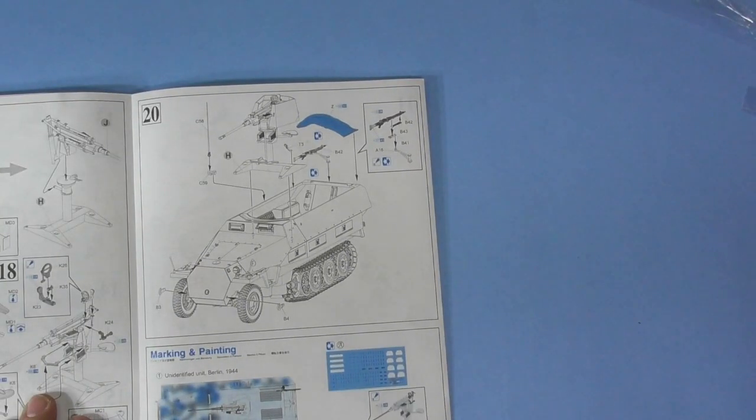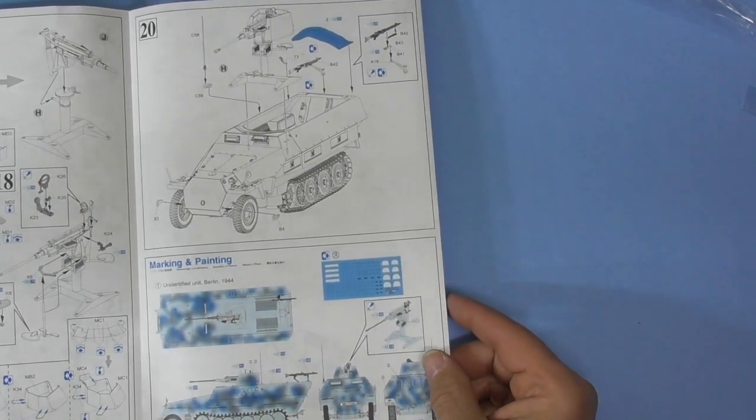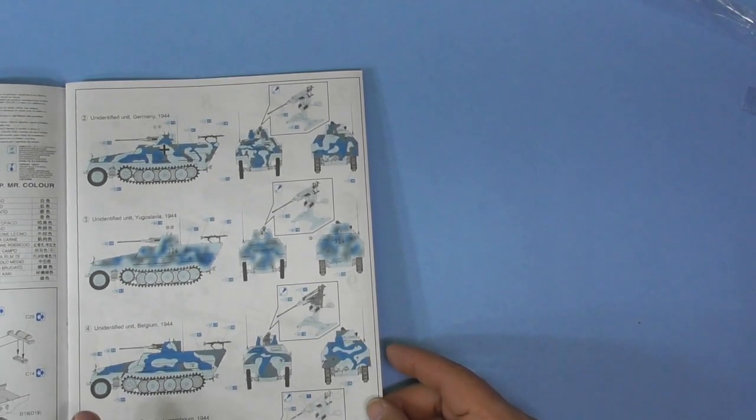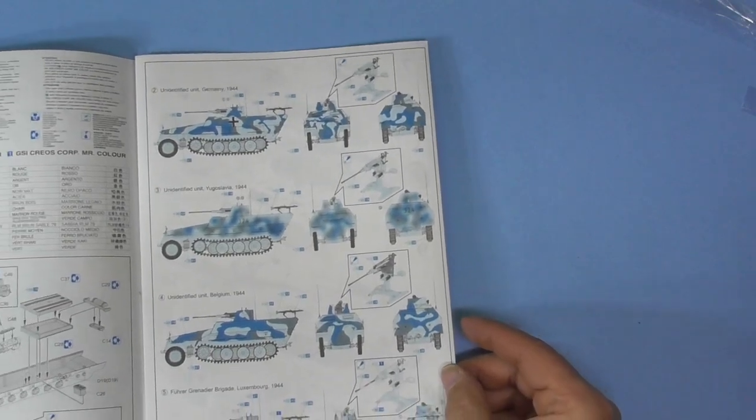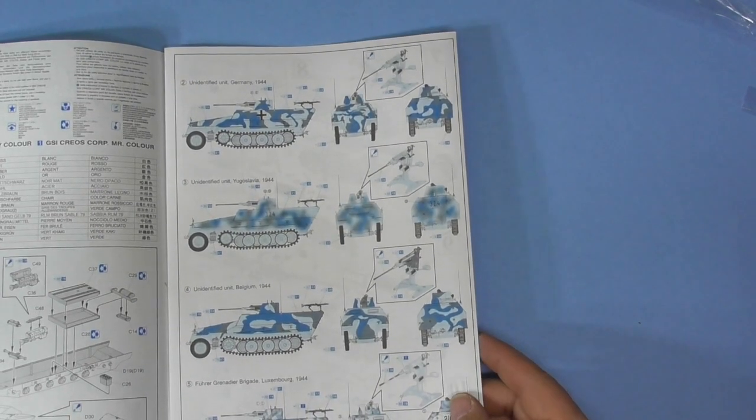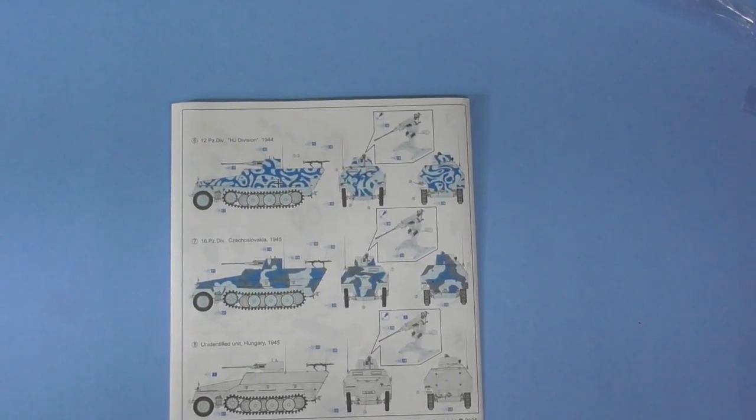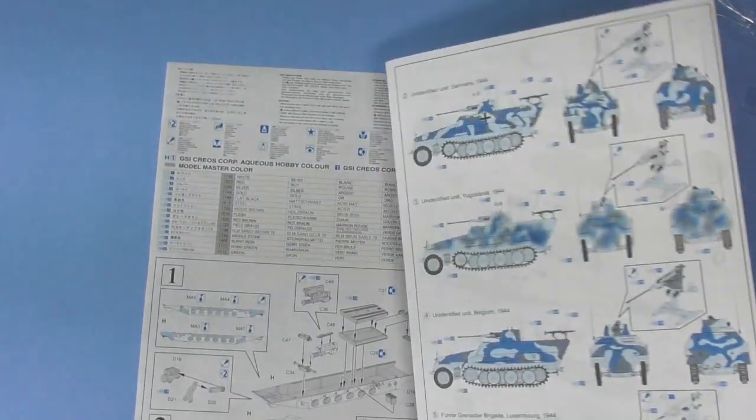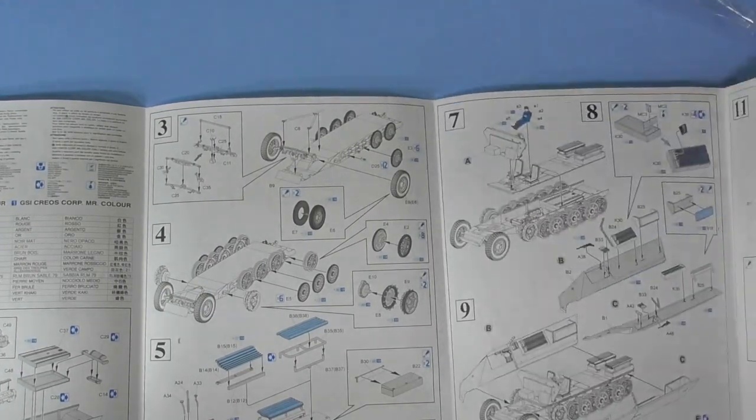Mounting the gun. Mounting it in place. Using whichever one of the parts you want. The metal one that comes pre-folded. You can fold one. Or you can use the plastic one. Then you're adding your final bits. Your gun. Your tarp. Your back guns. Color call out for unidentified unit. Berlin 1944. Belgium. Yugoslavia. Germany. Luxembourg. Different color calls. Different decals for different versions. H.J. Division. Czechoslovakia. Unidentified unit. Hungary.